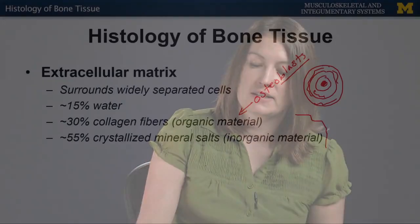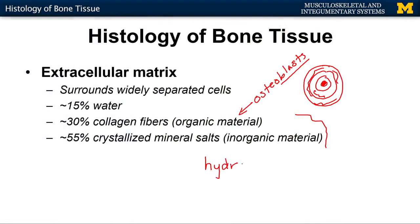About 55% of the extracellular matrix is going to be composed of inorganic materials, or those minerals — specifically, hydroxyapatite. This is what's going to harden with the presence of these collagen fibers. It's important to note that you're not going to have the hardness of the bone without the presence of the organic material — those secretions of the osteoblasts.